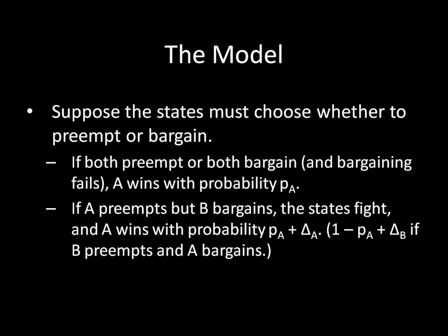There's no advantage if we both attack at the same time. However, if A preempts and B is trying to bargain and is not prepared for the first strike, the states fight a war and A now wins with probability PA plus delta A, where delta A represents the additional probability of victory from striking first. In contrast, B wins with probability 1 minus PA plus delta B if B preempts and A bargains. Whoever strikes first when the other is bargaining gains this inherent advantage — the delta factor representing the first strike advantage. War is still costly, and to keep things simple, costs CA and CB remain constant regardless of who starts the war.